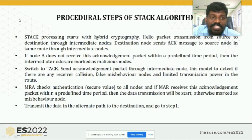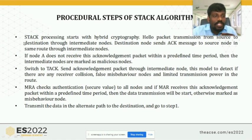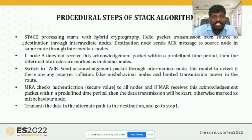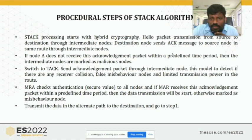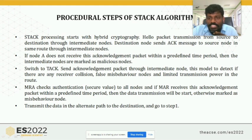This is the procedure — a diagnostic procedure. To start, broadcast routing information, that is, the route request to neighbor nodes with hybrid cryptography. This secures both active nodes and passive nodes. Once the route request is transferred from source to destination through intermediate nodes, the destination sends the acknowledgement back to the source node through the intermediate nodes.